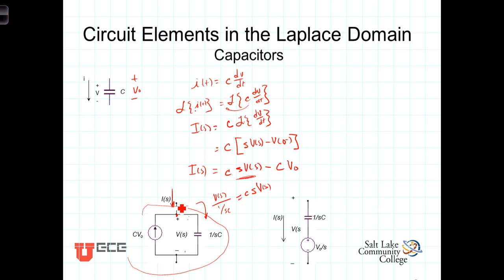And the current flowing into here is Cs*V(s), and the current flowing into here is Cs*V(s) minus the current coming in here, which is C*V0.